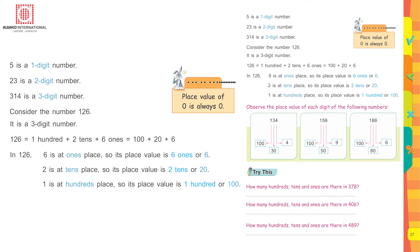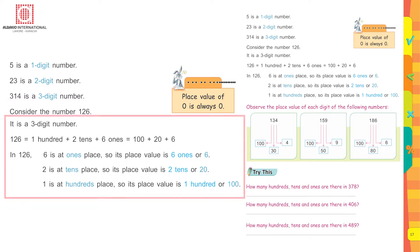5 is a one-digit number, 23 is a two-digit number, 314 is a three-digit number. Consider the number 126 — it is a three-digit number. 126 equals 100 plus two tens plus six ones.